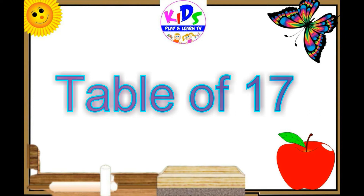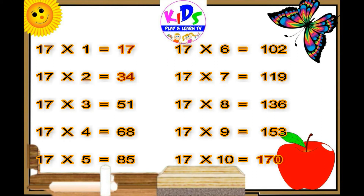Let's learn the table of 17. 17 ones are 17, 17 ones are 17. 17 twos are 34, 17 twos are 34. 17 threes are 51, 17 threes are 51. 17 fours are 68, 17 fours are 68. 17 fives are eighty-five.